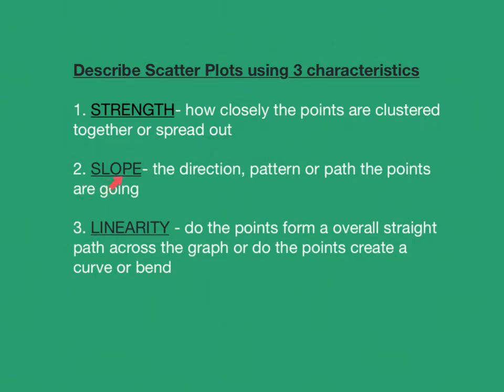Then a second characteristic is slope, and slope is just the direction or the pattern, could be also called the path, that the points or the dots on the graph are going. Are they continuing to go up and up and up or down, down, down?